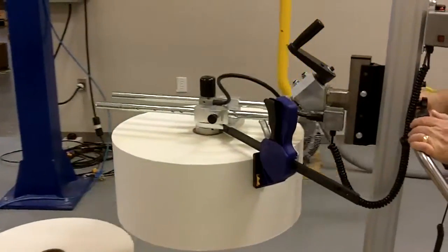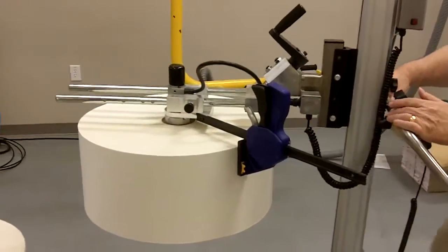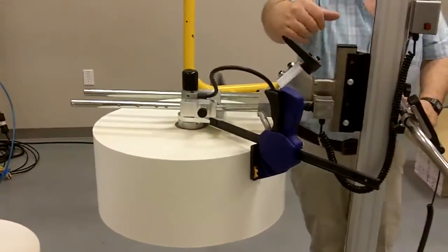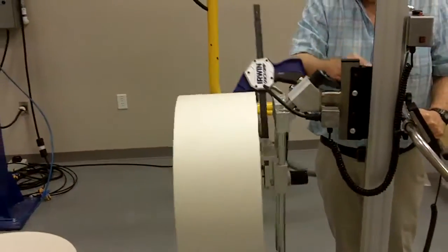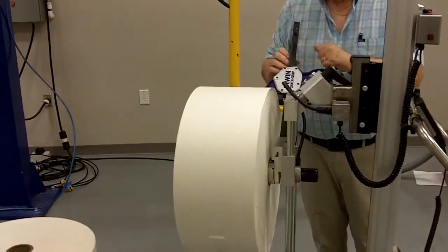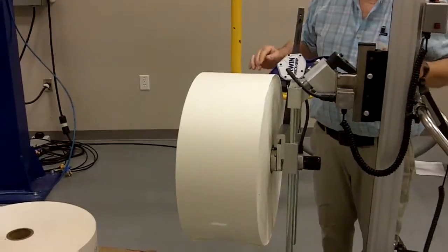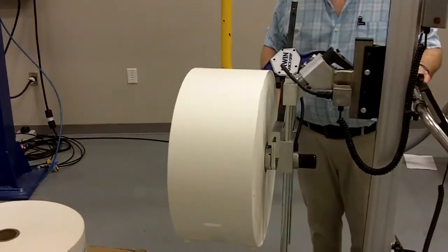move away from the pallet, set the brake, and then rotate the roll. When you get to your spindle, remove this, de-expand it, and then shove the roll onto the spindle.